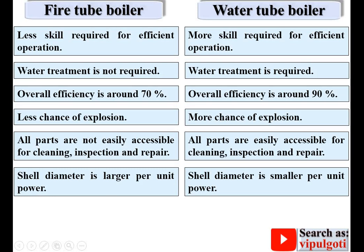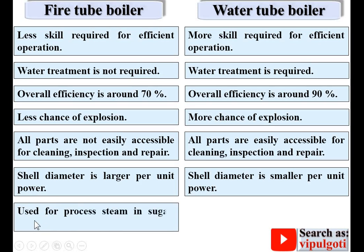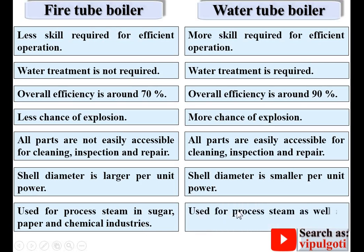If you compare per unit power, shell diameter is larger in case of a fire tube boiler. Fire tube boilers are used for processing in sugar, paper, and chemical industries, whereas water tube boilers are used for processing as well as power generation.